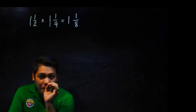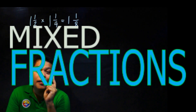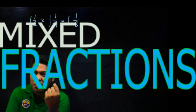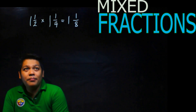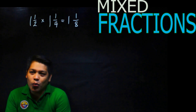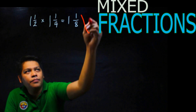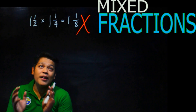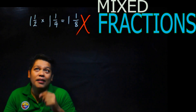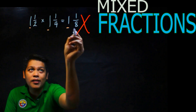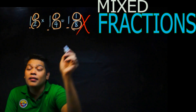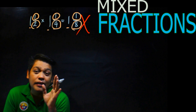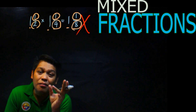Number 3: solving mixed fractions. We were just talking about fractions, now mixed fractions — many get confused here. For example, the operation is multiplication: 1 and 1 half times 1 and 1 fourth equals 1 and 1 eighth — which is wrong. You cannot directly multiply them like that. You're thinking 1 times 1 is 1, 1 times 1 is 1, 2 times 4 is 8.